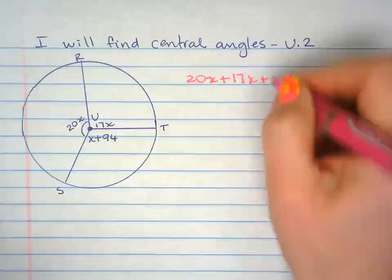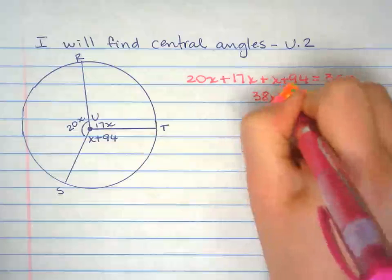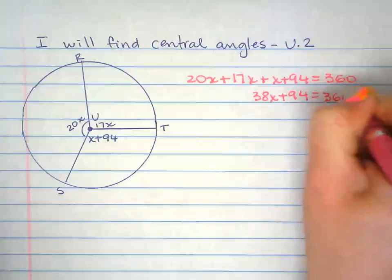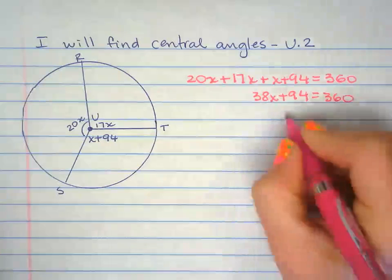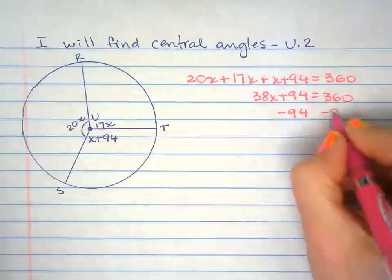You have 38x plus 94 equals 360. We're isolating x right there. So minus 94 from both sides.